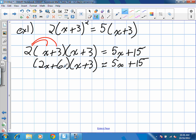We then go about first terms. 2x times x gives us 2x squared. 2x times 3 gives us 6x. 6 times x gives us 6x. And 6 times 3 gives us 18. It's still equal to 5x plus 15.